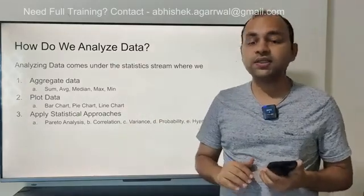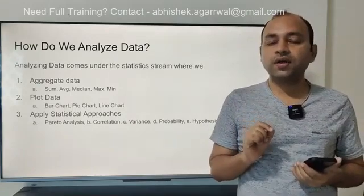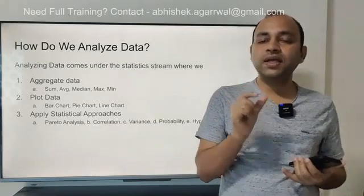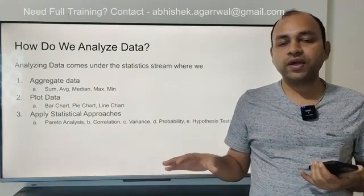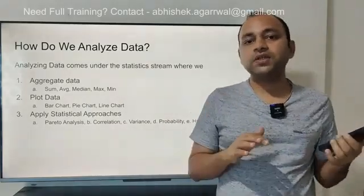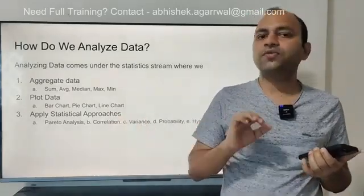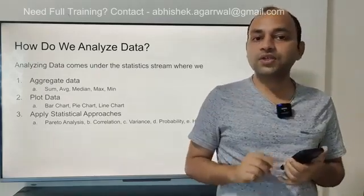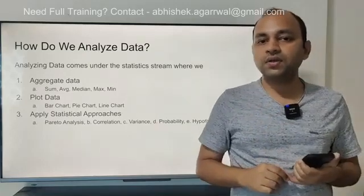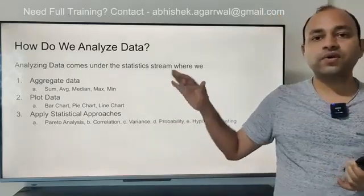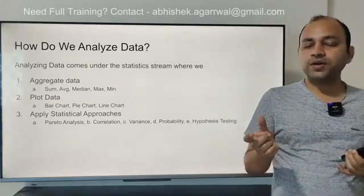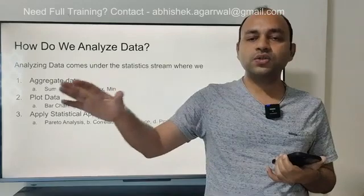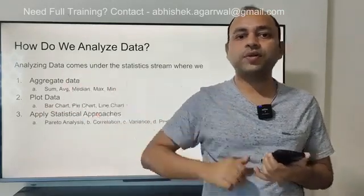Starting with Pareto analysis — very impactful. It tries to identify what are those 20% of scenarios impacting 80%, or vice versa. For example, suppose you are a company with 1,000 customers, but only five customers are making 80% of the revenue. That means you have a revenue concentration issue — if any one of those customers decides to move to a competitor, your revenue drops drastically. This is the 80-20 principle: 80% of results come from 20% of causes.